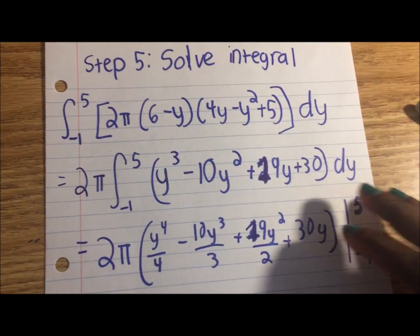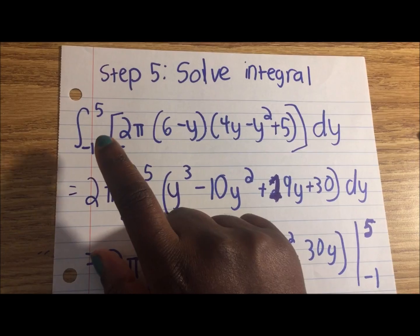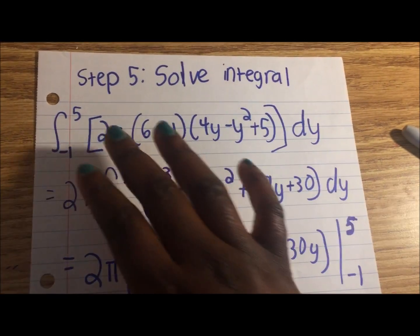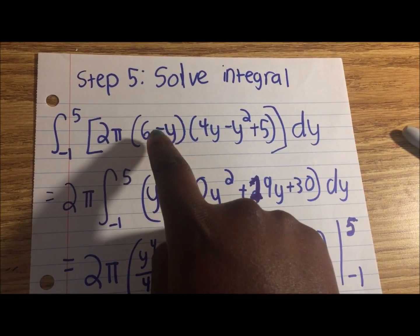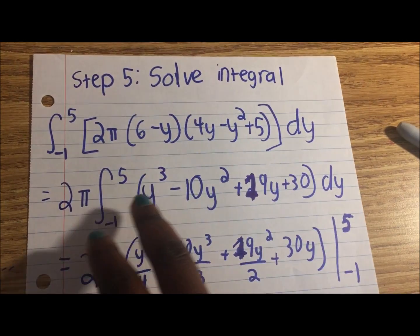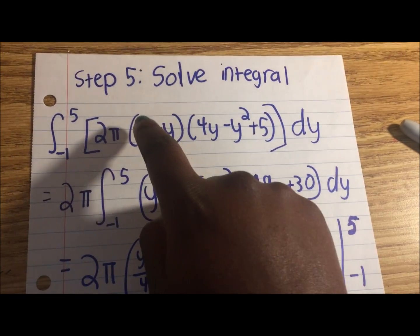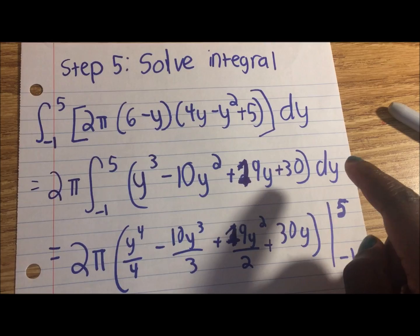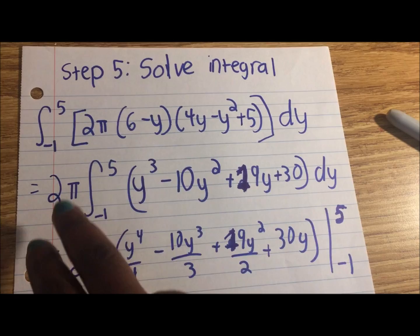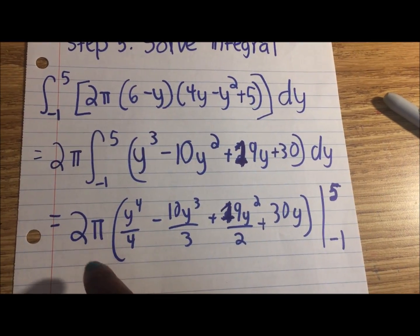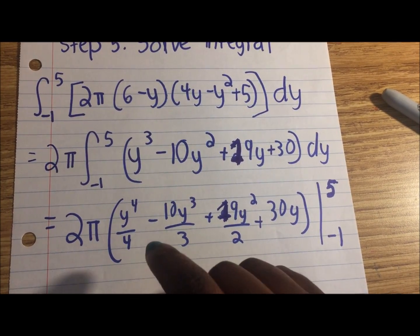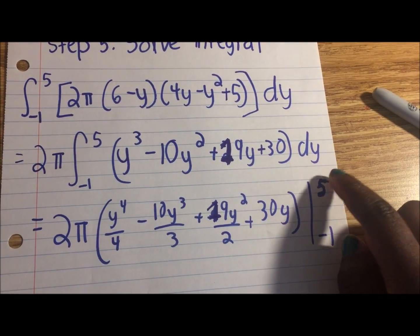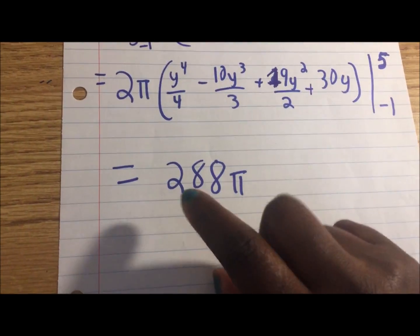Step five, solve the integral. The integral is from −1 to 5 of 2π(6 − y)(4y − y² + 5) dy. I take out the constant 2π and then multiply out (6 − y)(4y − y² + 5), which gives y³ − 10y² + 19y + 30. Integrating gives 2π[y⁴/4 − 10y³/3 + 19y²/2 + 30y] evaluated from 5 to −1. When you evaluate this, you get 288π as the answer.